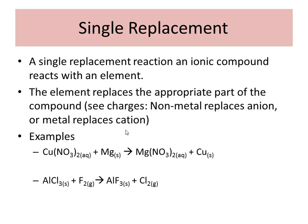We all know metals have positive charges because cats have paws — cation, cat, paws. So in this case, we have copper nitrate reacting with magnesium. This is our compound reacting with our element. The nitrate ends up with the magnesium — it's switched partners. I like to think about this as a couple on a date: copper and nitrate.